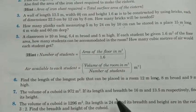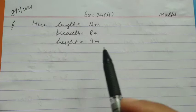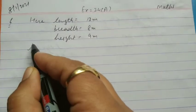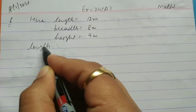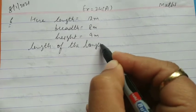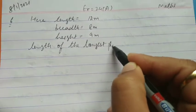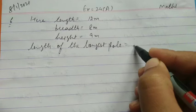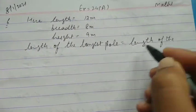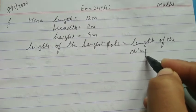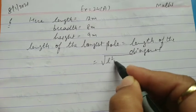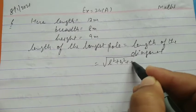Length, breadth, and height are given. Length is 12 meter, breadth is 8 meter, and height is 9 meter. The length of the longest pole is the length of the diagonal. The formula for the length of the diagonal is: root of L squared plus B squared plus H squared.